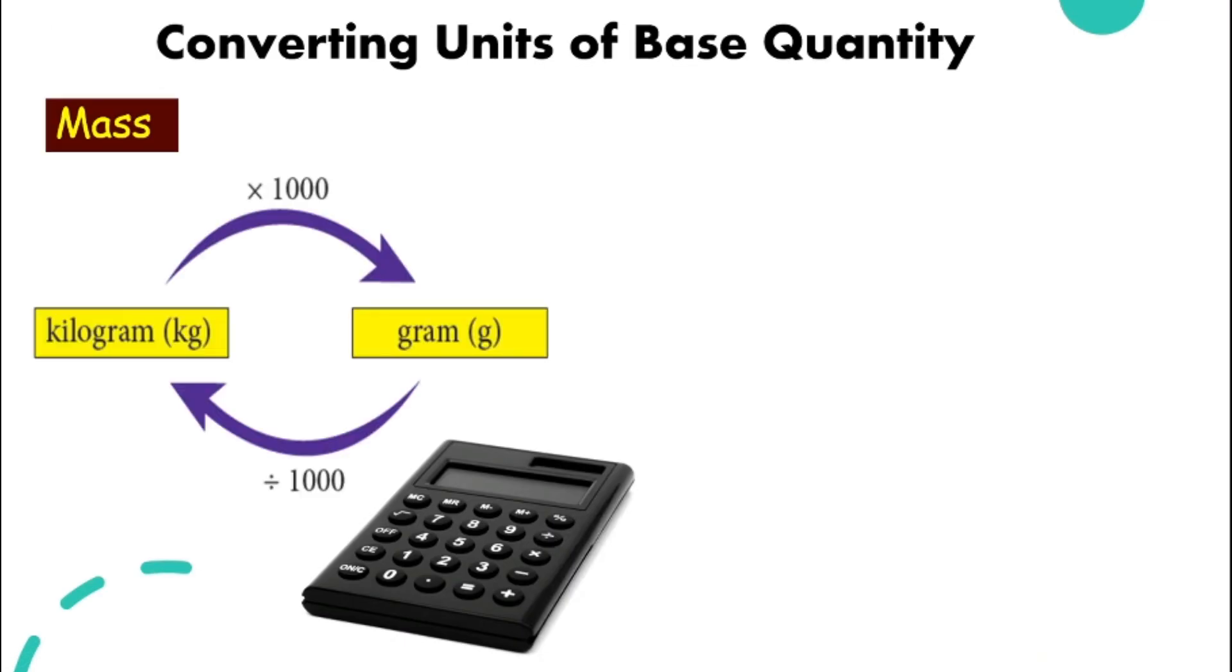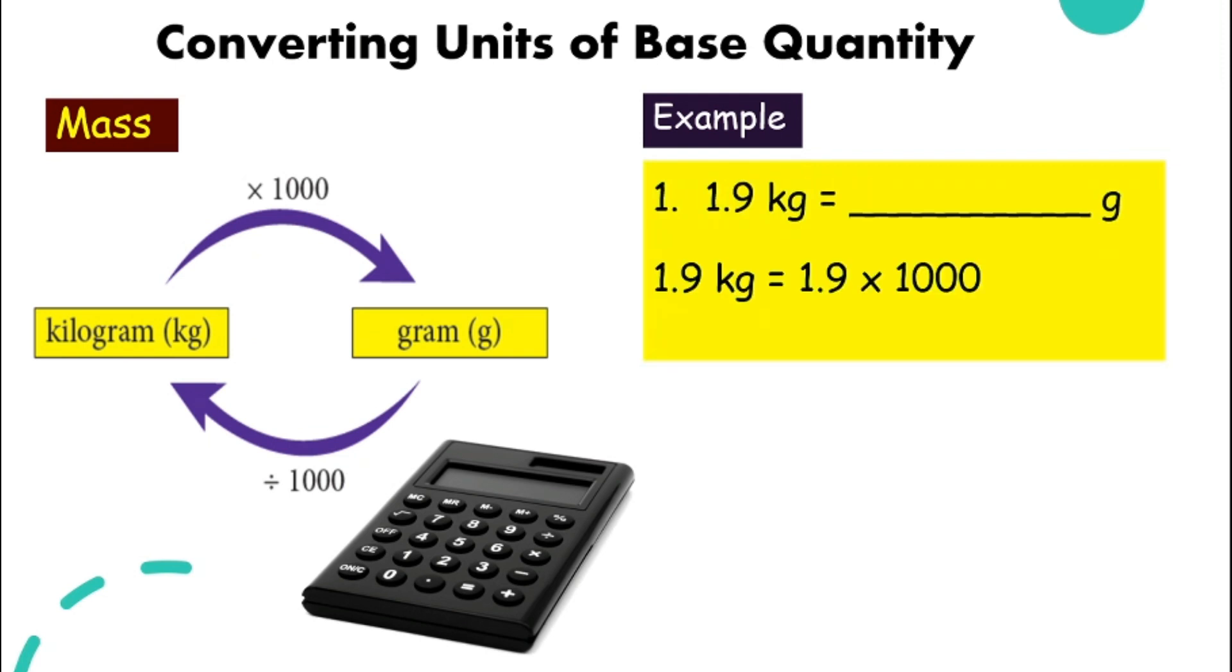So for kilogram and gram, from kilogram, if you want to convert the unit to gram, we times 1000. But if we go backward, it will be divide 1000. For example, 1.9 kilogram, what is that in gram? You times 1000. Take 1.9 times 1000. If you need help with the calculator, the answer is 1900.